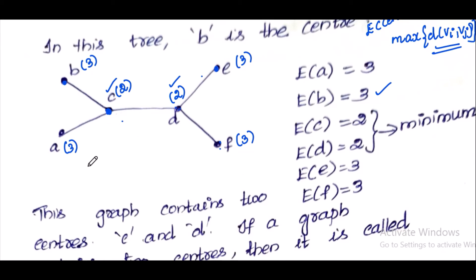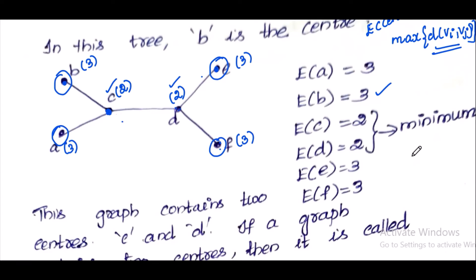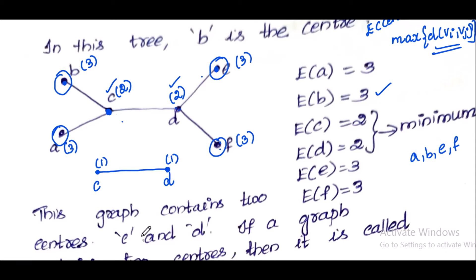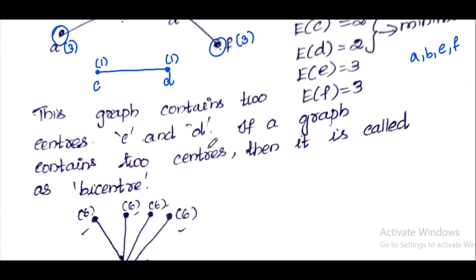The graph contains two centers, C and D. If a graph contains two centers, then it is called a bicenter. This graph is the bicenter. In another example, if the center is the same for all vertices, then there is a single center. The maximum distance determines the eccentricity of each vertex.